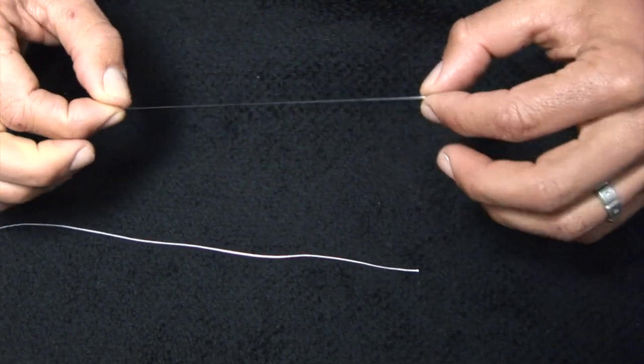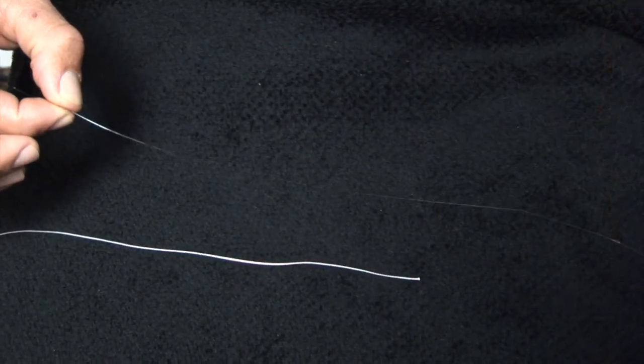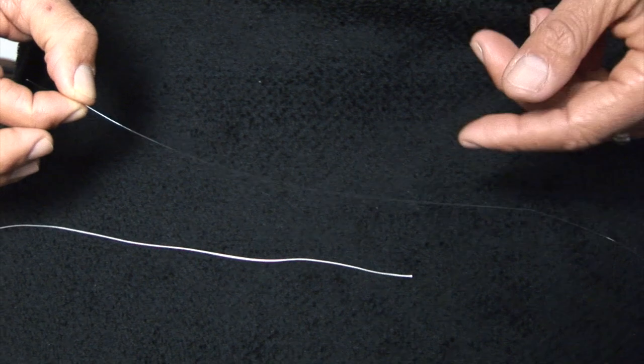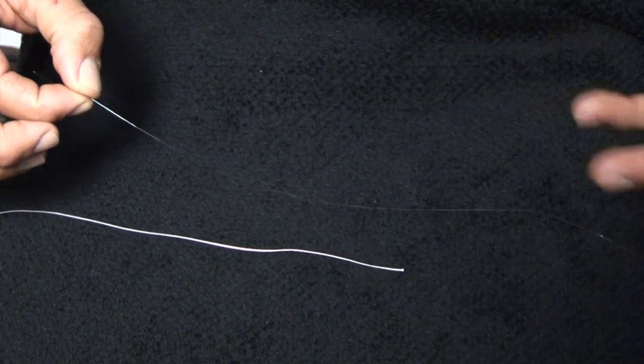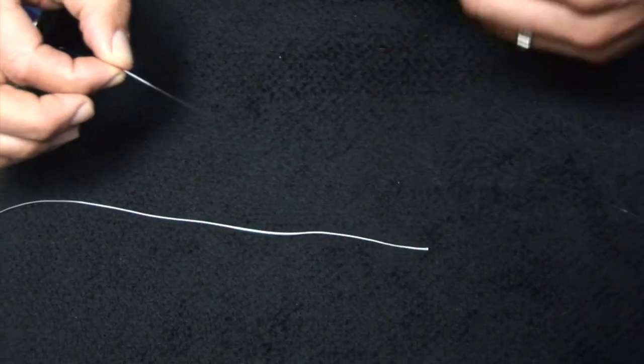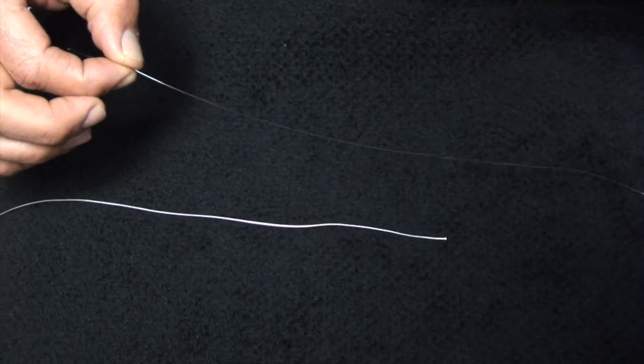A lot of times when you're using this slip you want to keep the bait from maybe tangling the braid, like a topwater or a jerk bait from wrapping itself and catching the braid. We all know if you throw straight braid to one of those baits they can tangle up really easy.